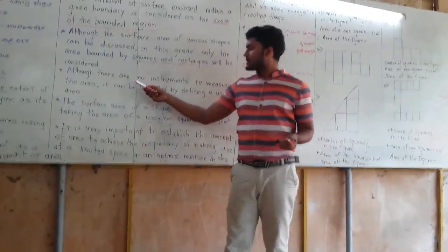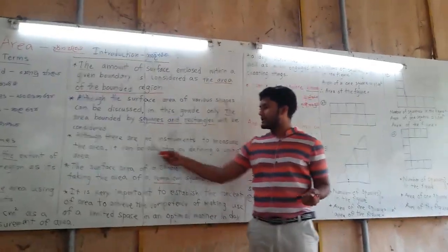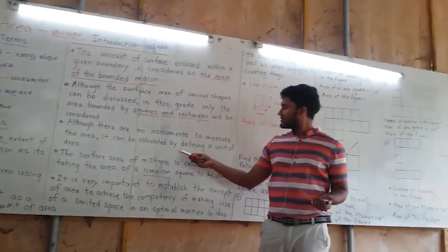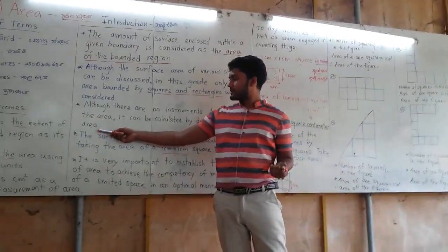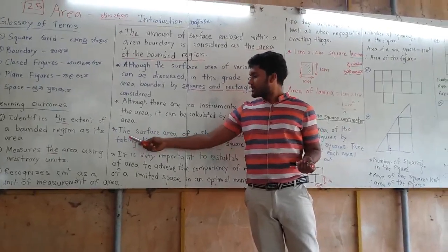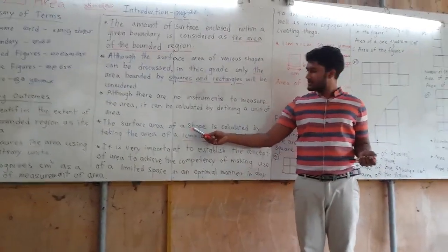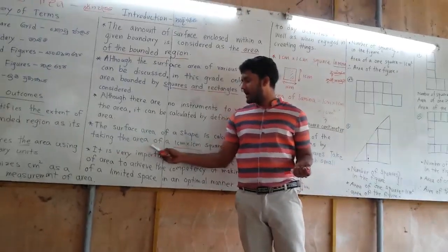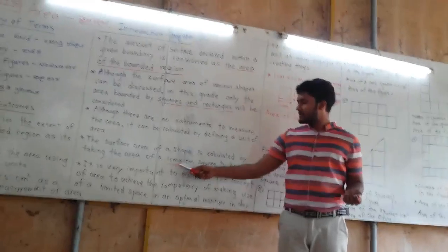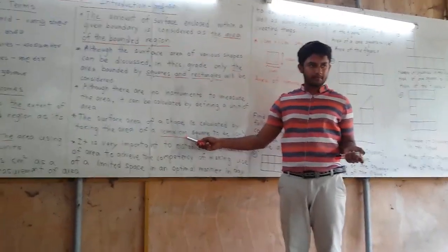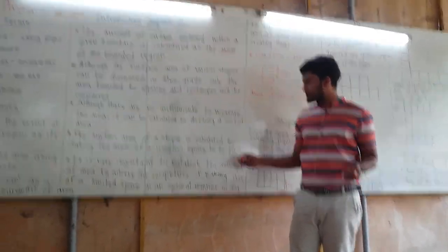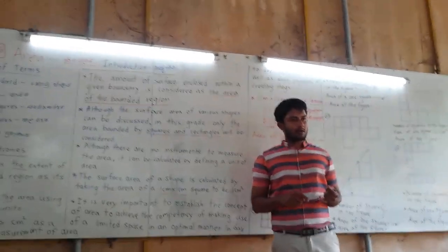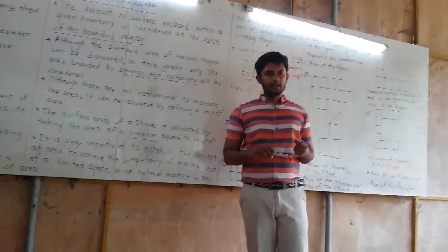Although there are no instruments to measure the area, it can be calculated by defining a unit of area. The surface area of the shape is calculated by taking the area of 1 centimeter into 1 centimeter square. So the unit is 1 centimeter squared. What is the normal unit of measuring the area? Centimeter square.